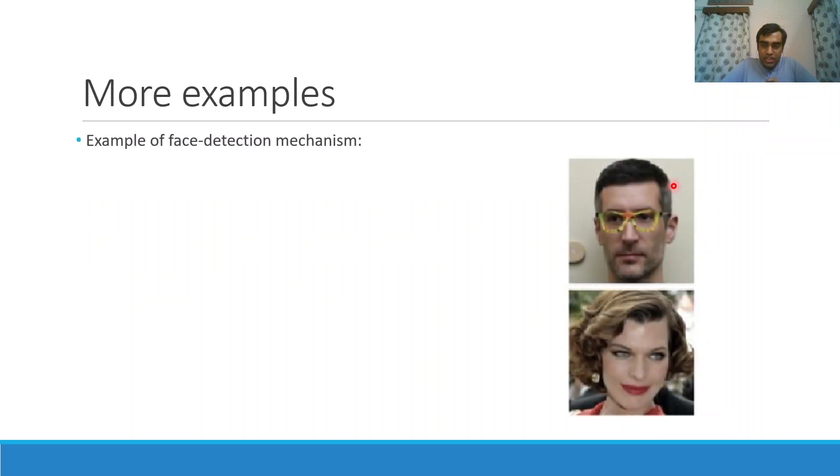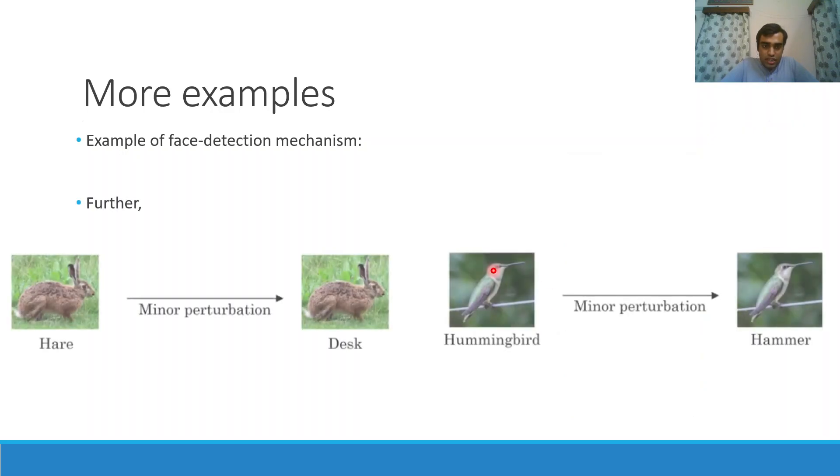Another example is a face detection mechanism. Let's see this person 3D prints specially designed glasses and then wears them. Now the face detection mechanism is fooled into thinking that this person is the same as this lady. There are some other examples also, like minor perturbations in this image can cause the hare to be classified as a desk and hummingbird to be classified as a hammer.